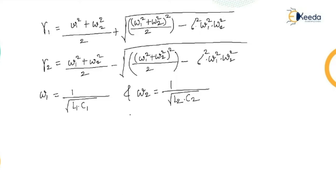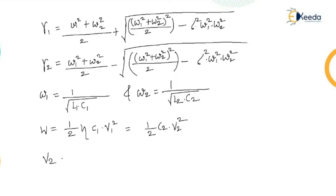From the energy perspective, the efficiency η can be represented as: W = (1/2)·C1·V1² = (1/2)·C2·V2², which gives V2 ≈ V1·√(η·C1/C2). It can be shown that if the coefficient of coupling k is large, the oscillation frequency is less, and for large values of the winding resistances and k, the waveform may become a unidirectional impulse — as will be discussed in the next section on switching surge generation.